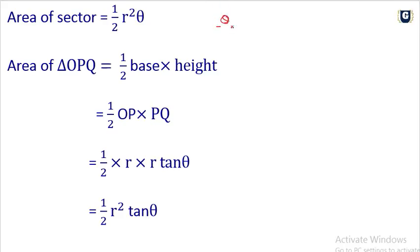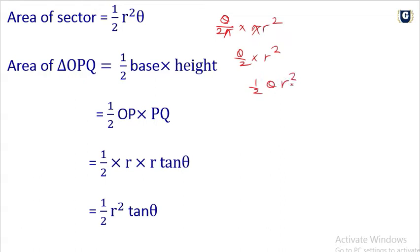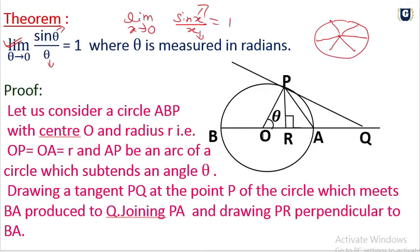The area of sector OPA is one half times R squared times theta. Now for triangle OPQ: when angle OPQ is 90 degrees, PQ is perpendicular to OP.